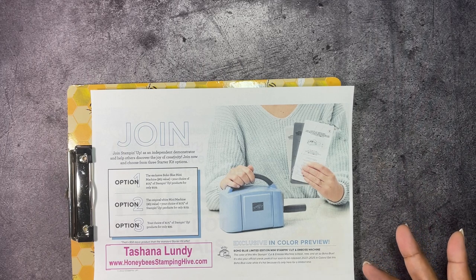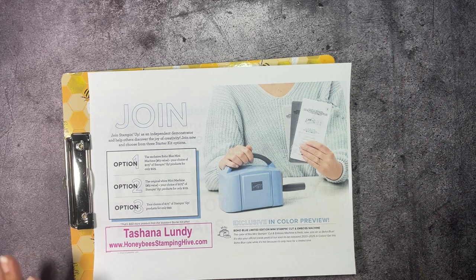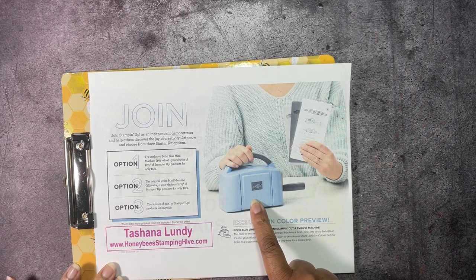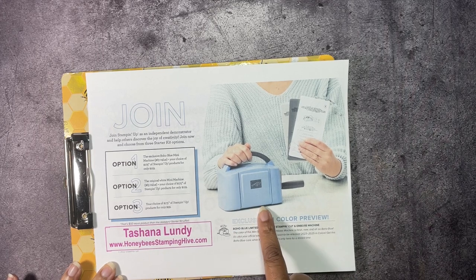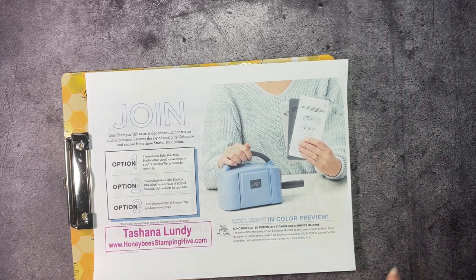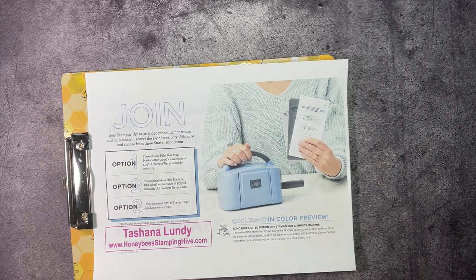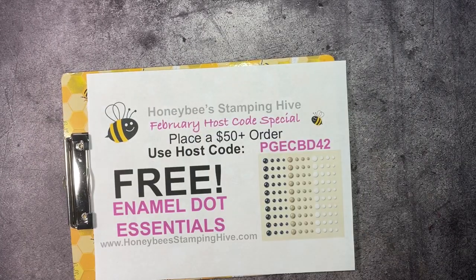The kit is $99 plus tax and you get to pick out $175 worth of product. That is $50 more than the standard starter kit. If you want this mini stamping and cutting emboss machine in the new boho blue in color or if you want it in the white, you just pay $129 plus tax but you still get to choose $175 worth of product.